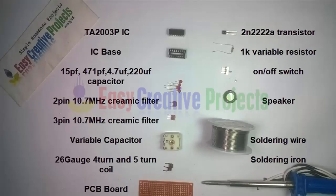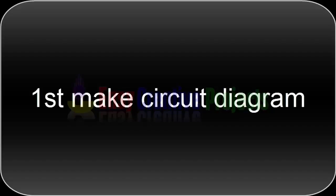TA2003P IC, 15pF, 471pF, 4.7 microfarad and 220 microfarad capacitor, 2-pin and 3-pin 10.7 MHz ceramic filter, variable capacitor, 26-gauge 4-turn and 5-turn coil, PCB board, 2N2222A transistor, 1K variable resistor, on-off switch, speaker, soldering wire, soldering iron. First make circuit diagram.